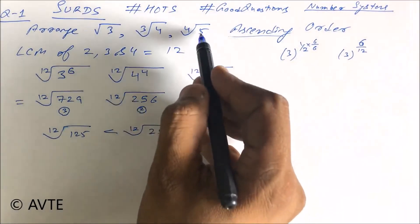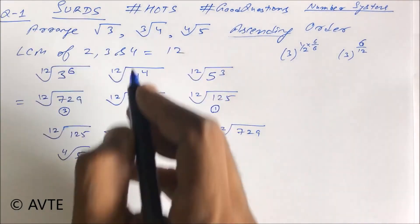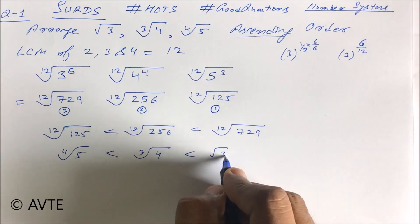So 12th root of 125, which is ∜5, is less than cube root of 4, is less than root of 3.